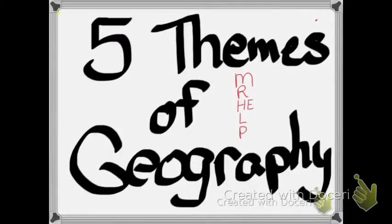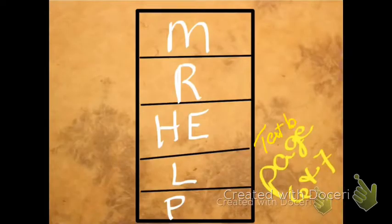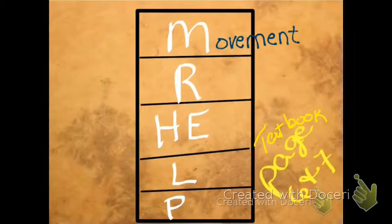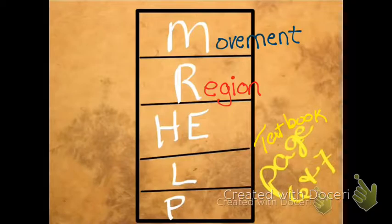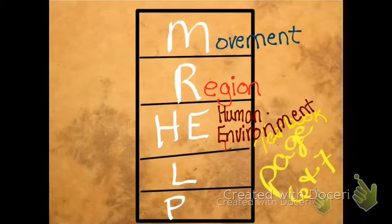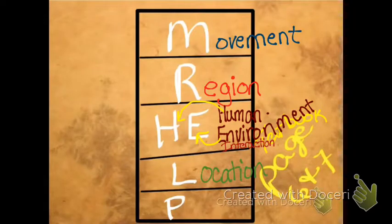Let's first talk about the themes. Mr. Help is a way to divide it up. M stands for movement. R is for region. The HE of Mr. Help is Human Environmental Interaction. The L is Location. And finally, Place.